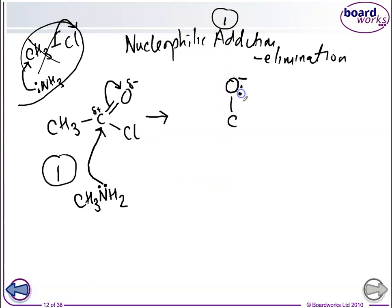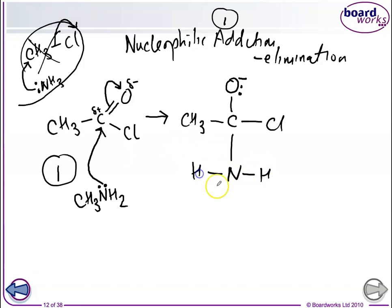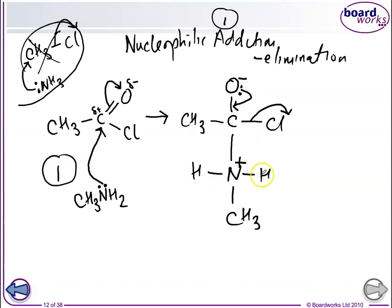In the intermediate: the oxygen has gained a pair of electrons, the Cl stays in place, and the CH₃ group is unchanged. The nitrogen now has four bonds, making it a positively charged intermediate. Then in one step: the Cl leaves, the lone pair on oxygen reforms the C=O double bond, and one hydrogen leaves from nitrogen. Three curly arrows are needed for this elimination step.